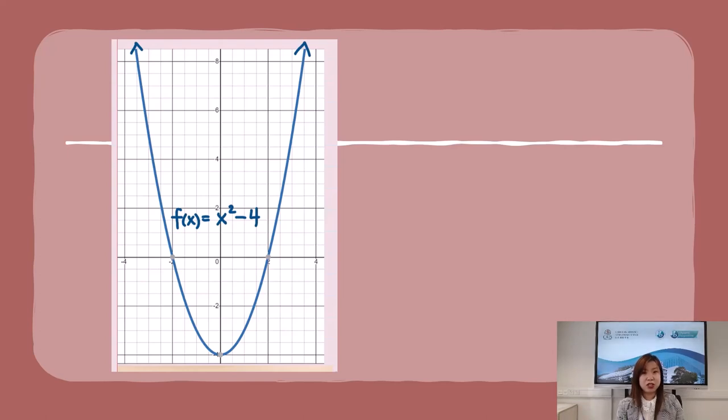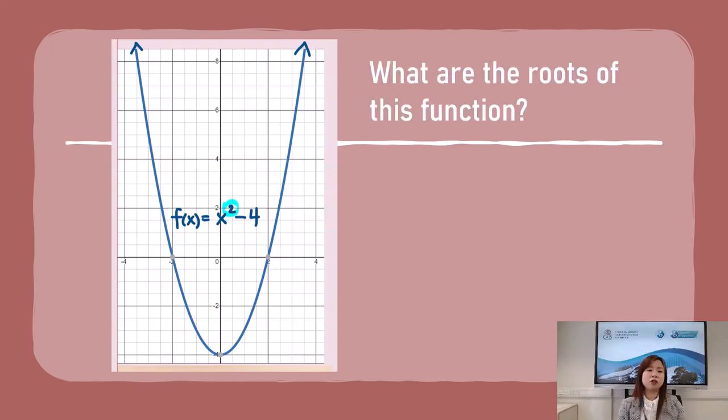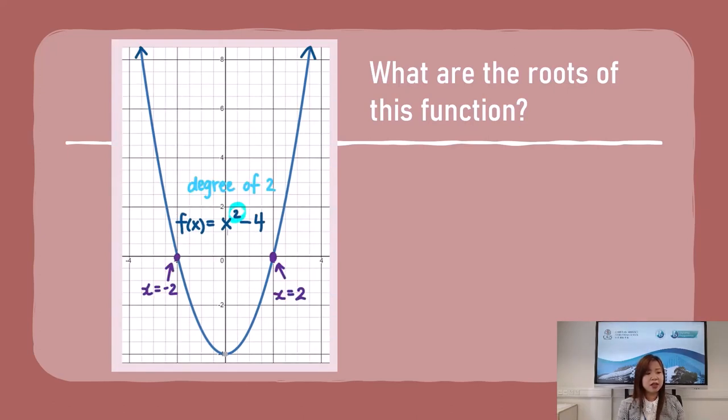So let's look at something that we know. This function here, it's a parabola: f(x) = x² - 4. With an exponent 2, we know it has a degree of 2. So what are the roots of this function? Visually, we can identify the roots by looking at the intersections of the function and the x-axis. The intersections are located at x = -2 and x = 2. Therefore, the roots of this function is x = ±2.